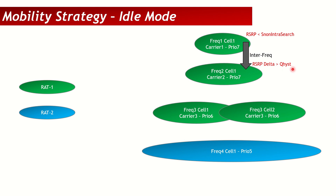For example, if s-non-intra-search is minus 106 and q-hysteresis is 2 dB, then when the user on frequency 1 is below minus 106 and frequency 2 is above frequency 1 by 2 dB — say minus 104 — the user will move from frequency 1 to frequency 2. Once the user moves further to the cell edge of frequency 2, it may need to move to frequency 3, which is priority 6, a lower priority.